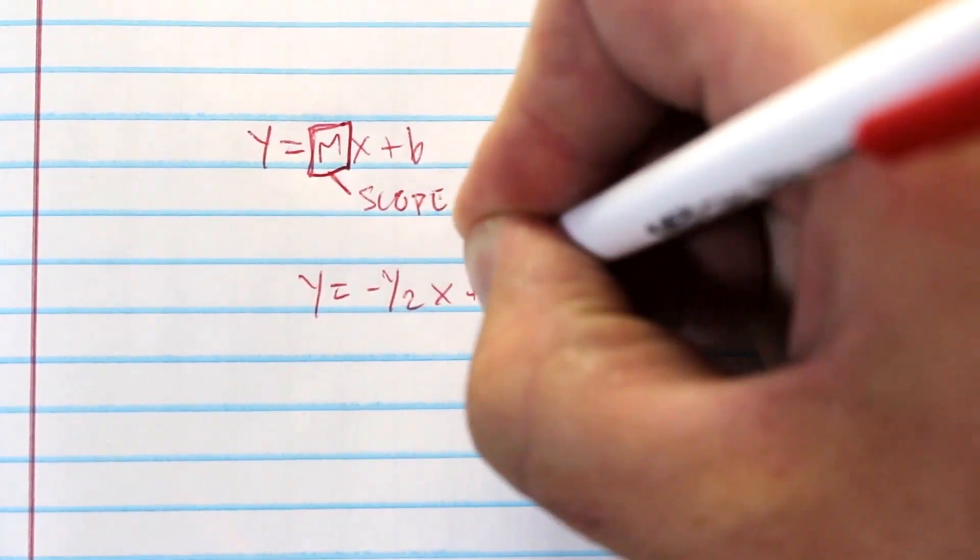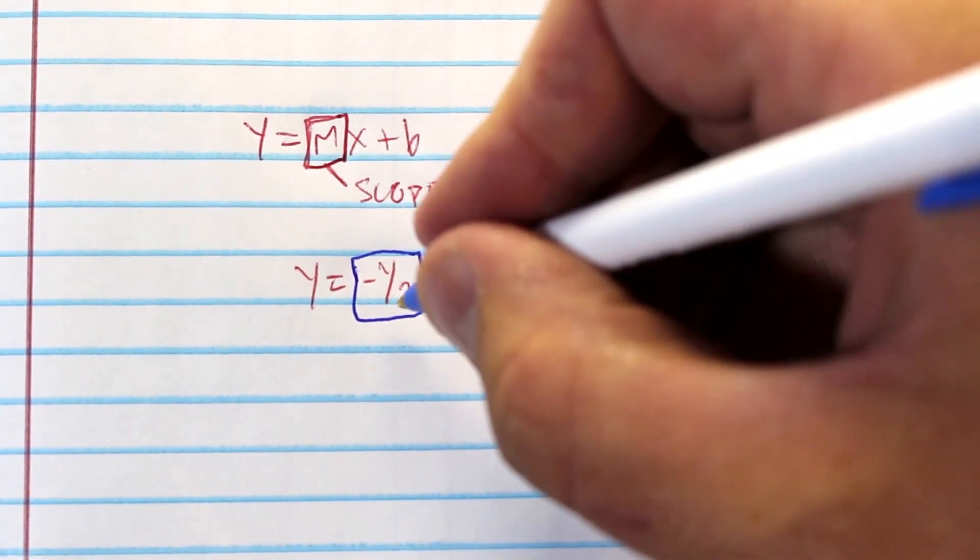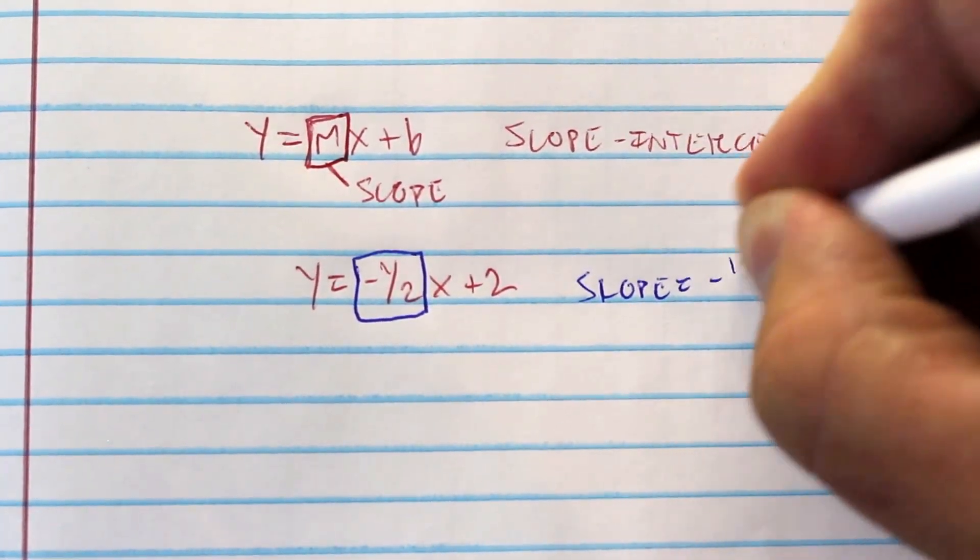So let's look at an example. If you're given y equals negative one-half x plus 2, this value in front of the x, this is your m, so this would be your slope. So your slope equals negative one-half.